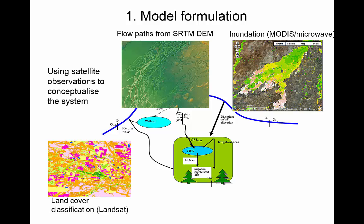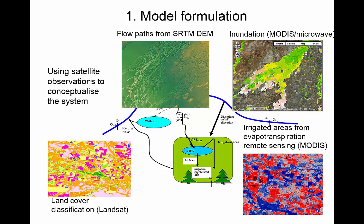We can use land cover classification to tell us where irrigation areas are and where they are not. And we can combine these data with estimates of evapotranspiration — using temperature, for instance — to tell us which of these irrigation areas were actually irrigated and at which times. Again, we can refine our mental model of this floodplain and river reach. So using satellite or space data for model formulation as inputs can already be tremendously valuable.